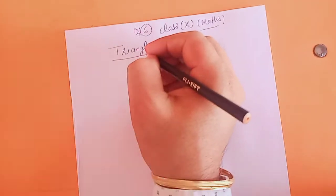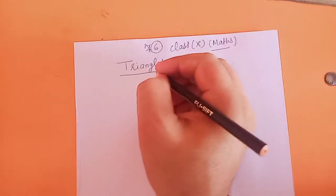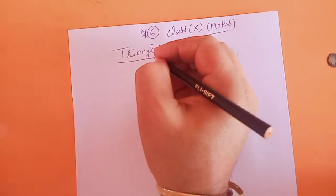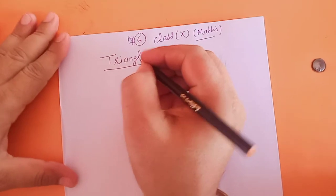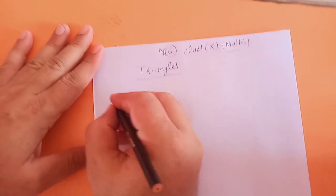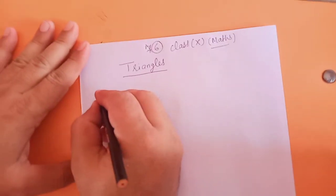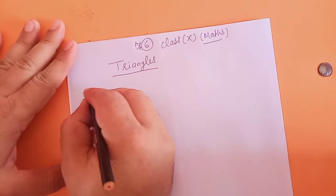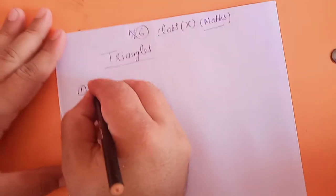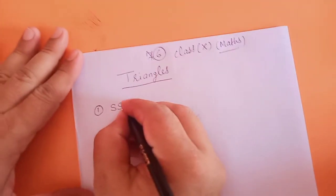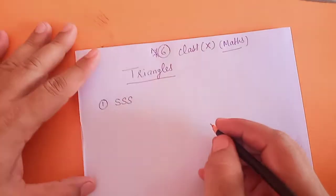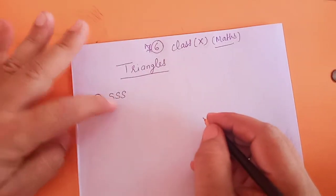In 9th class we have read about the congruence of triangles. There are 3 to 4 methods given by which you can prove 2 triangles are congruent. The first method is SSS — its name is Triple S.